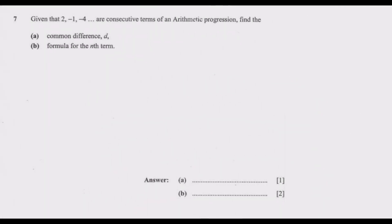Given that 2, negative 1, negative 4, ... are consecutive terms of an arithmetic progression, find: (a) the common difference d, and (b) the formula for the nth term.